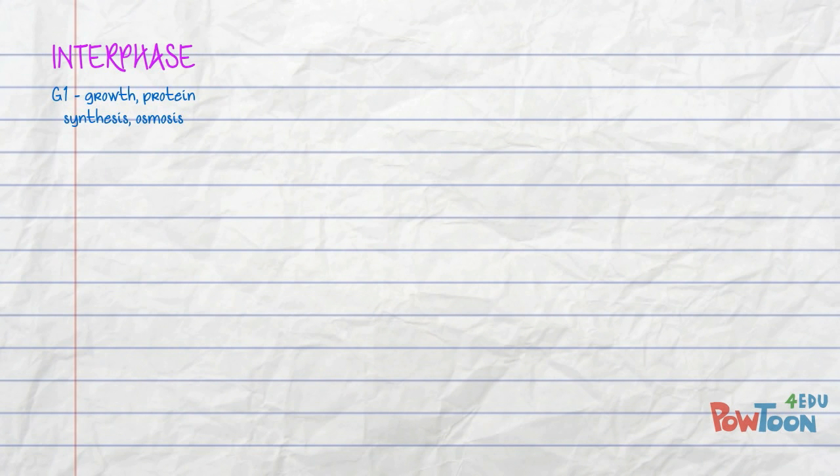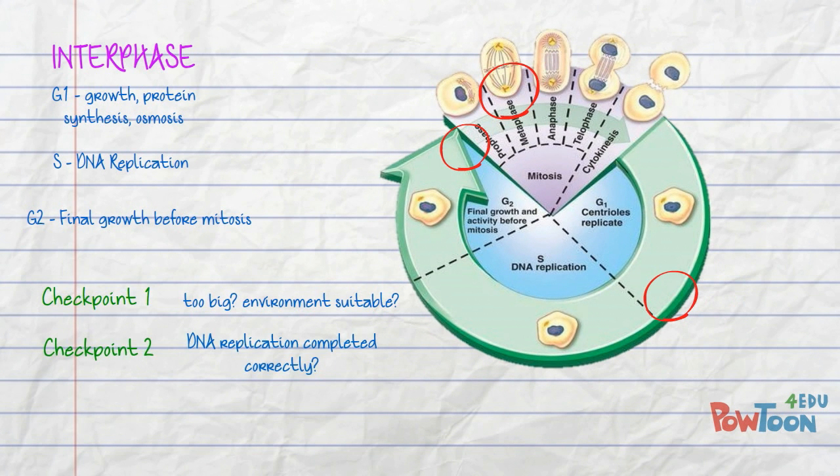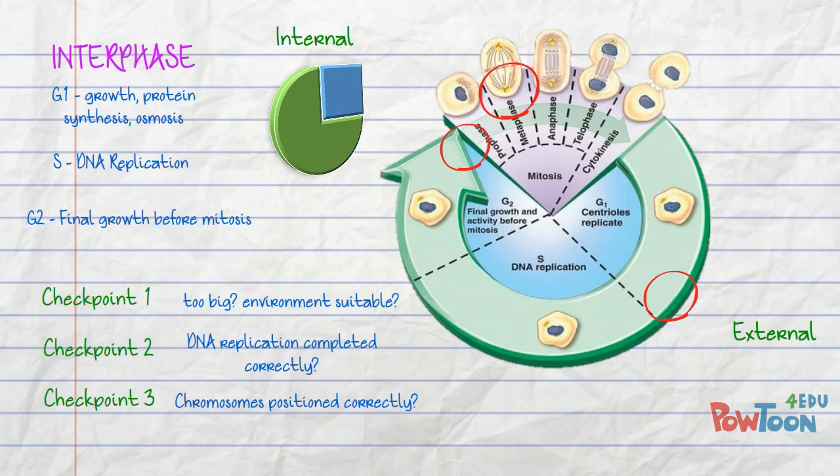Don't forget the three stages of interphase: G1, S, and G2. The positioning of and the questions asked at each of the checkpoints, as well as how they're answered, which are via use of those internal factors like CDK, cyclin, and MPF, and external factors like growth hormones.